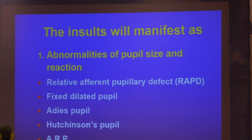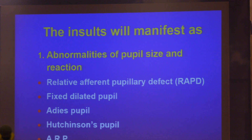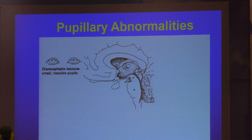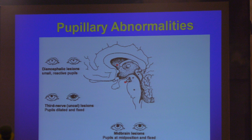Any abnormality of the pupils, apart from ophthalmic causes, should make you think of neurological causes. Whether it's a relative afferent defect — when there is a conduction problem, there will be an afferent pupil defect — a feeble pupil is not a good sign for the optic nerve. You should remember: whether it's constricted, too much dilation, irregular constriction, or irregular reaction — a fixed dilated pupil, any abnormality — for non-ophthalmic causes, it's always a problem in the brain.